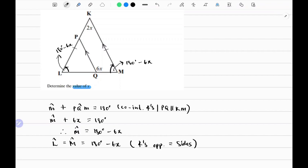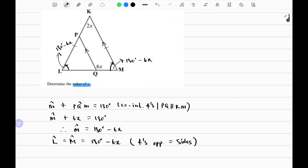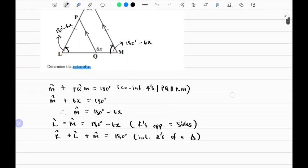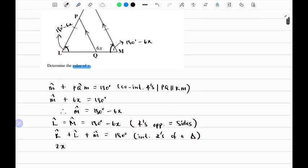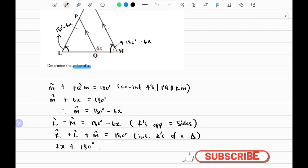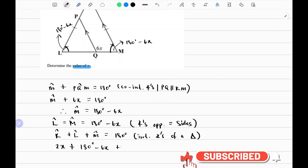Now we can use the sum of interior angles of a triangle, which adds up to 180 degrees. So angle K plus L plus angle M equals 180 degrees. Substituting: 2X plus (180 degrees minus 6X) plus (180 degrees minus 6X) equals 180 degrees.